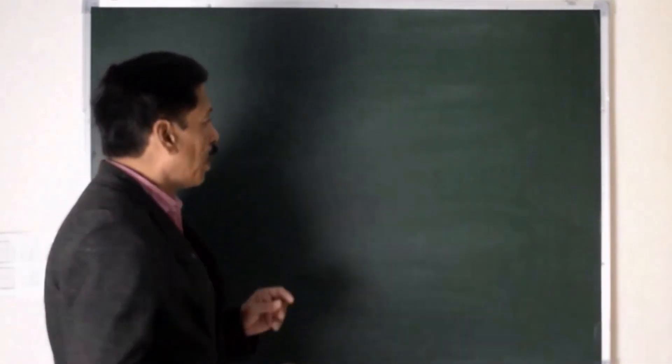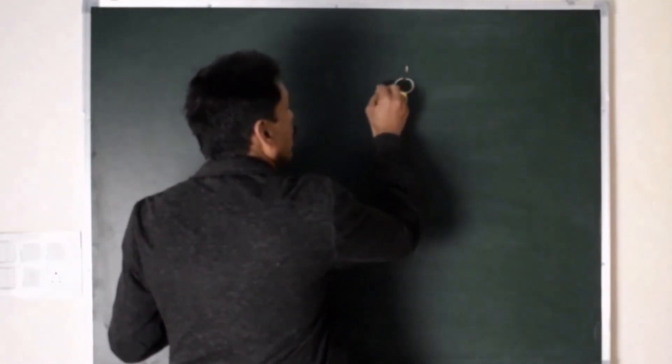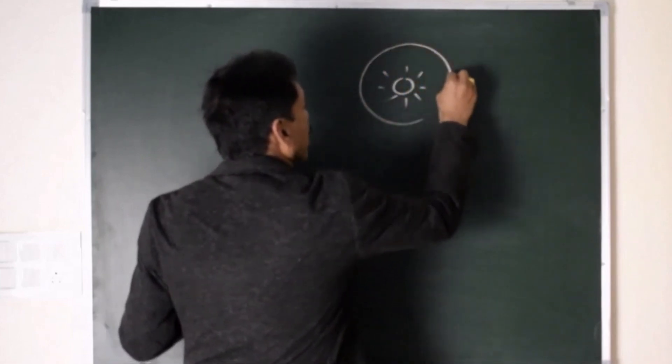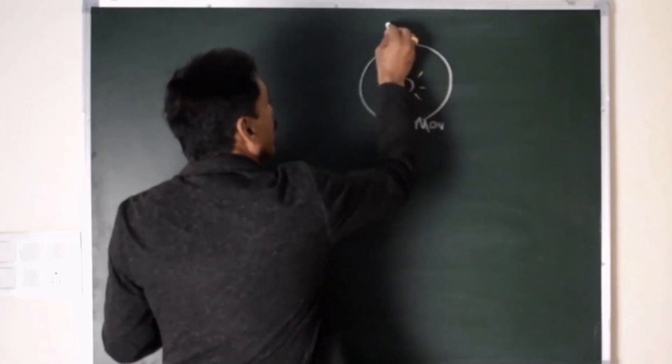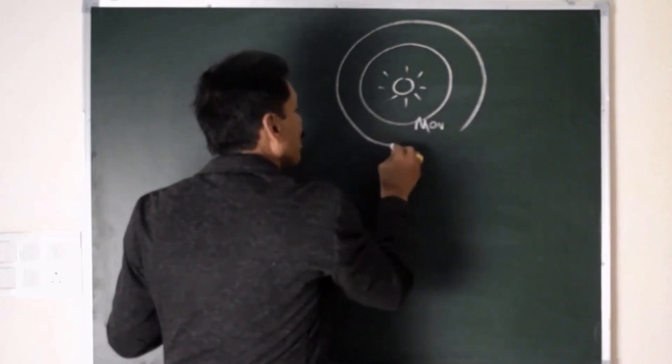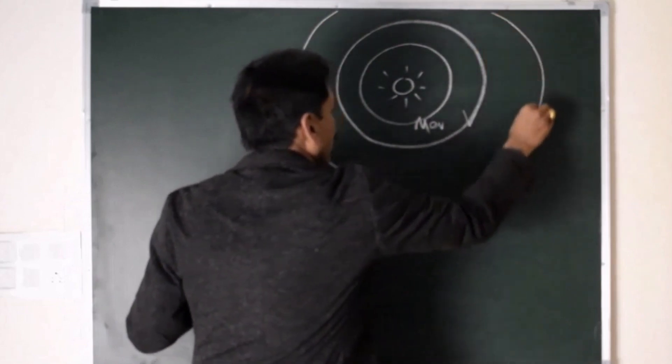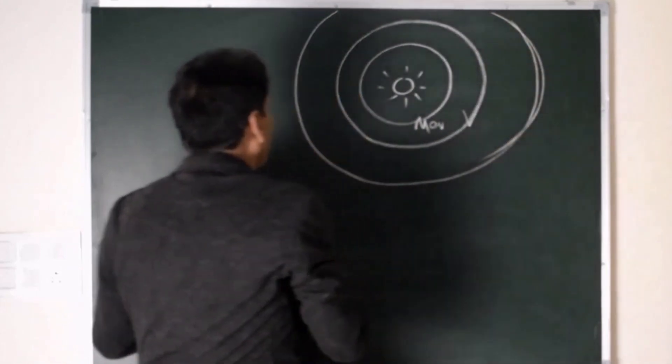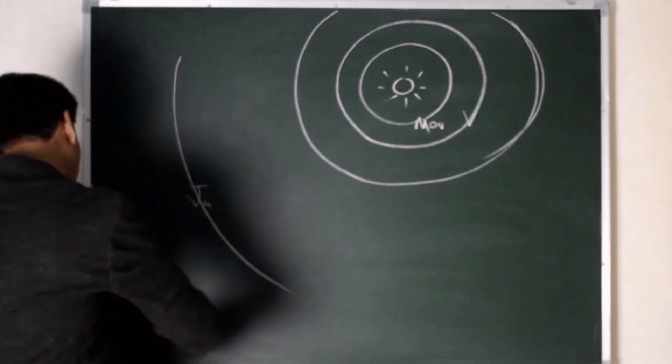Solar system would appear something like this. Say here is the Sun. The closest planet is Mercury. Then we have Venus. Then we have orbit of Earth. And then we have Jupiter. And then we have Saturn.